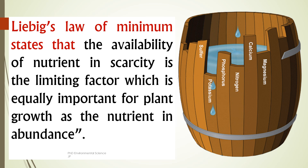This barrel represents a system or organism such as a plant. The vertical staves represent different essential nutrients such as nitrogen, phosphorus, potassium, sulfur, calcium, and magnesium. The water level in the barrel represents the potential growth of the plant. The key point is that the shortest stave — here labeled phosphorus — determines the maximum growth of the plant. Even if all other staves are longer or more abundant, the overall capacity is limited by the shortest one. The overall growth will be affected by whichever nutrient is in the shortest supply.